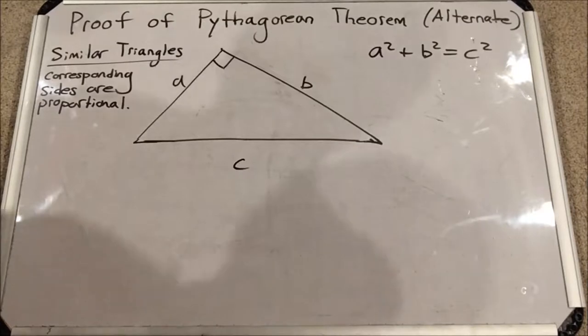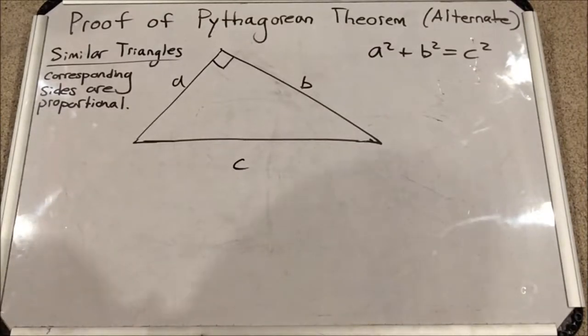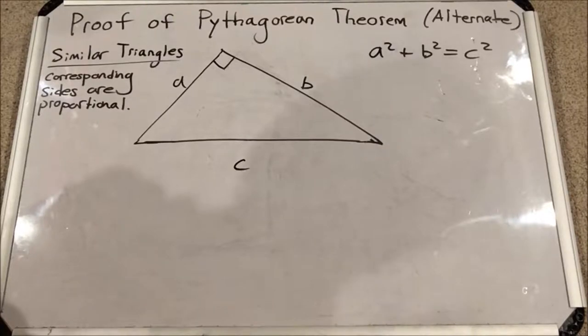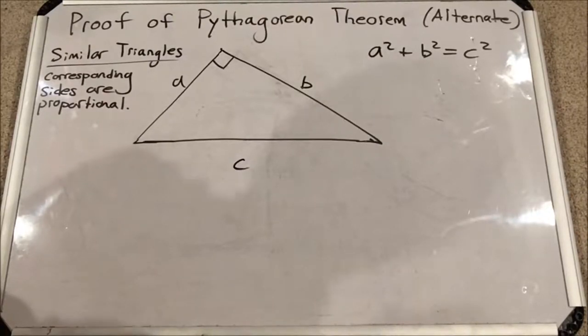Hey everybody, welcome to TutorTerrific. Today I have a proof of the Pythagorean theorem, which I call an alternate proof because I already have put up a proof on my channel using two squares, one inside the other.